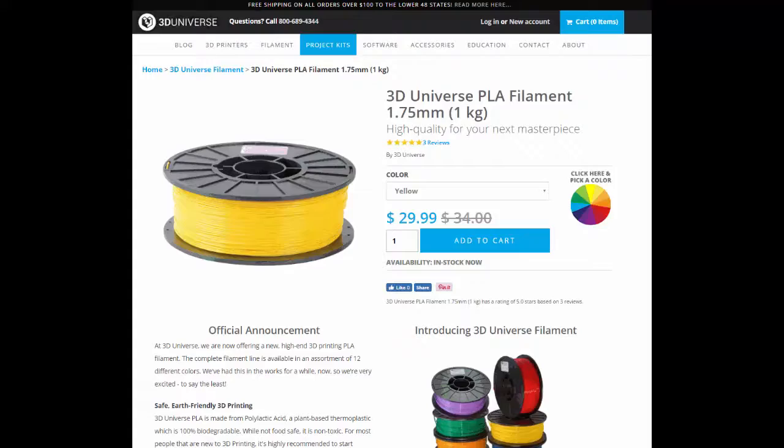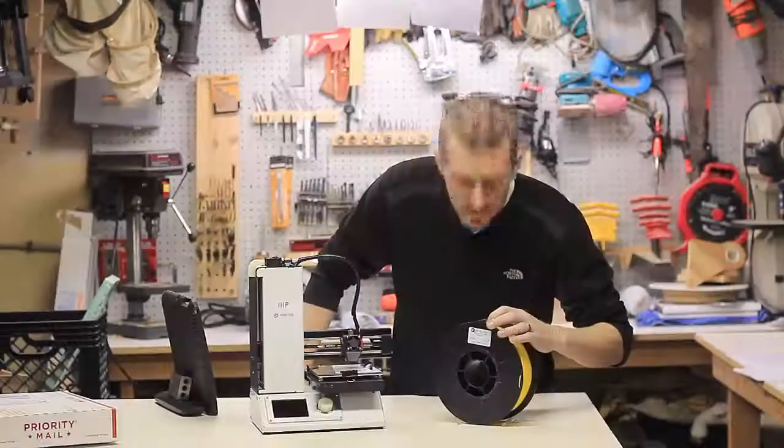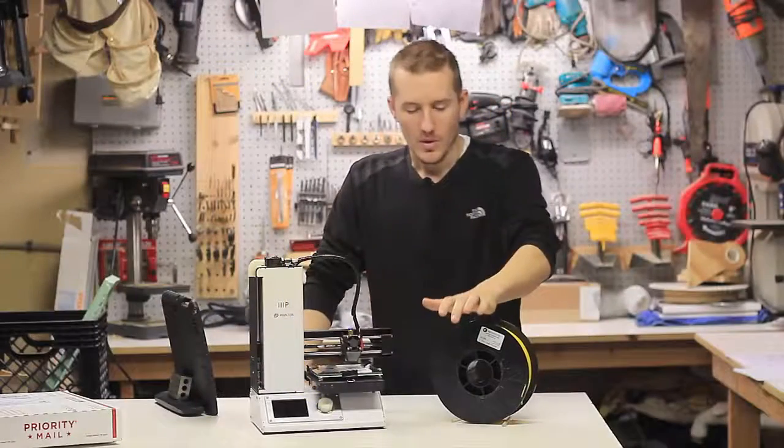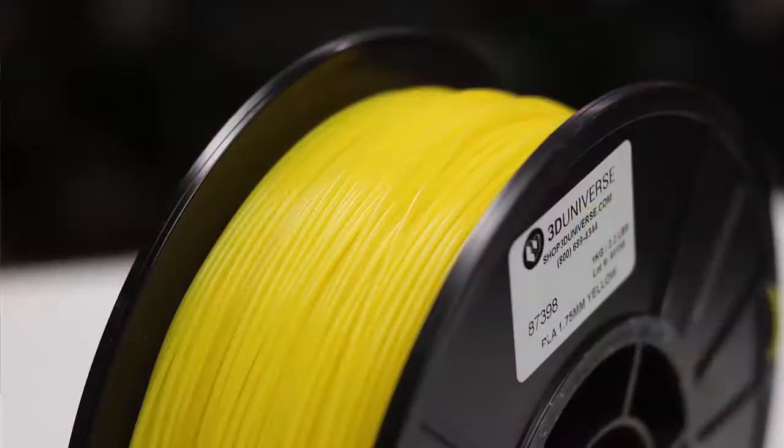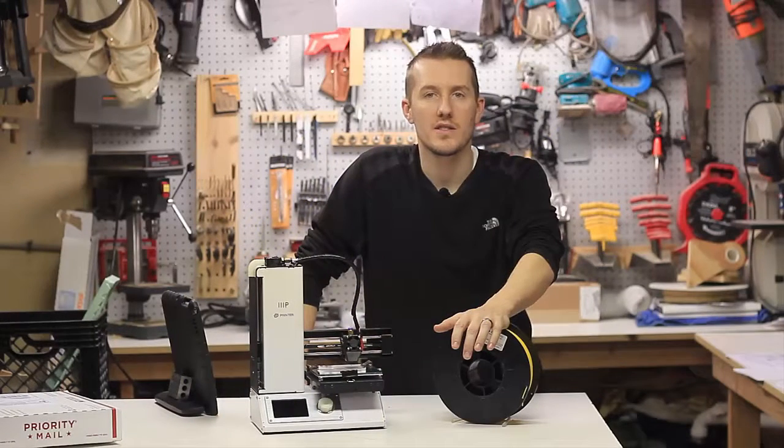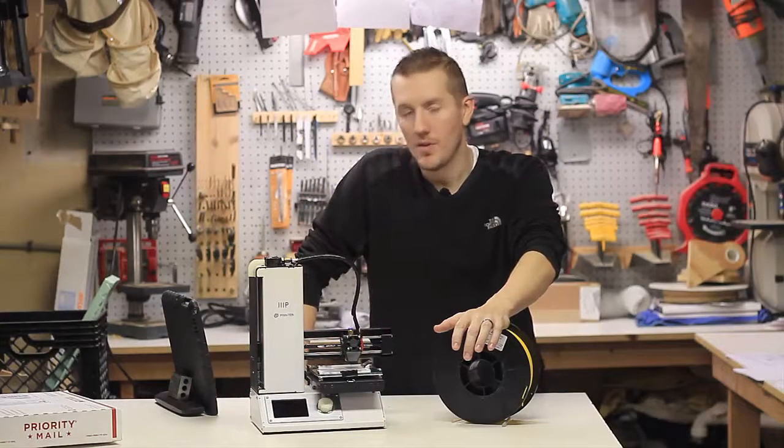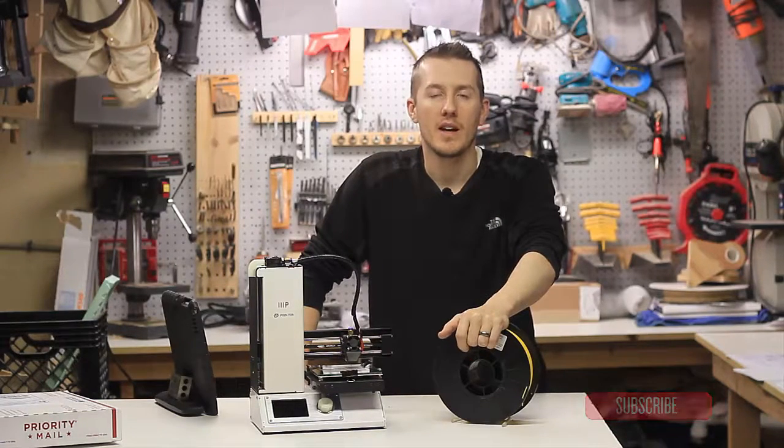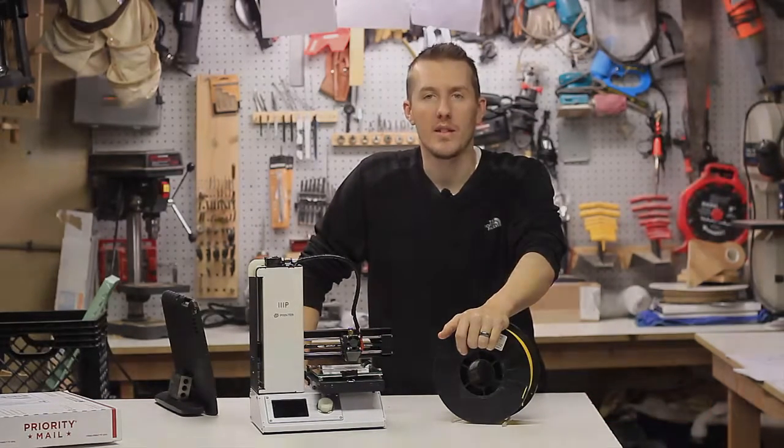This one is $30 a roll. I measured it up, it looks very consistent. It has a matte finish. This is their yellow. So we'll take it upstairs, I'll show you the settings I'm going to use. I'll start with the base PLA settings for the slicer, print out three or four different test prints, bring them back down here and look at them and see how they print, and I'll let you know what I think.